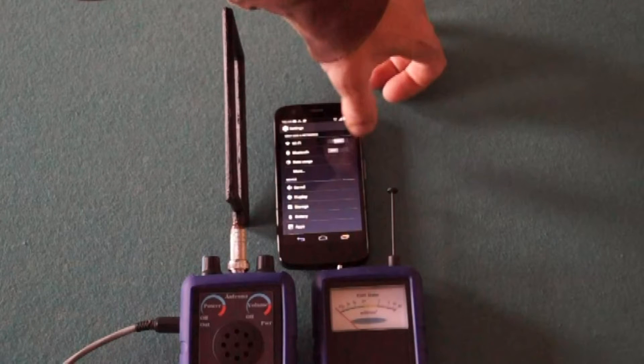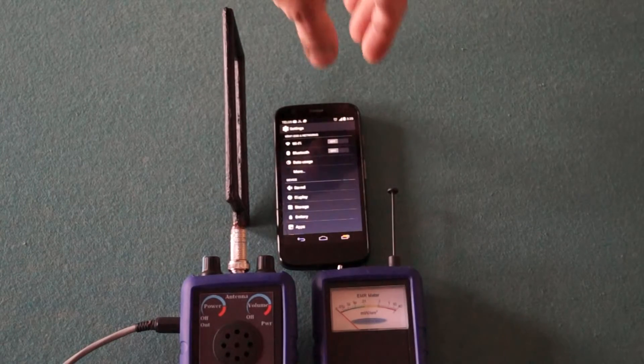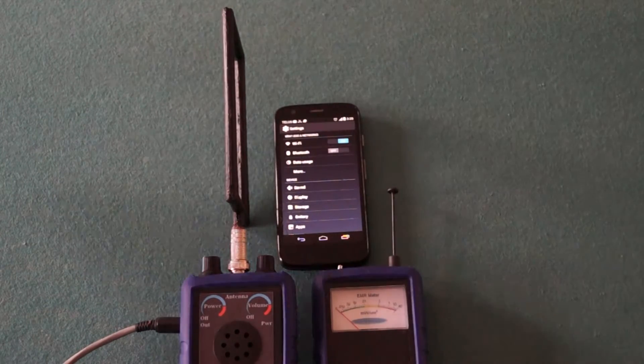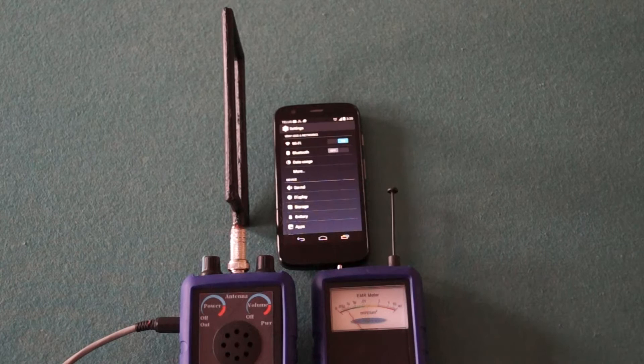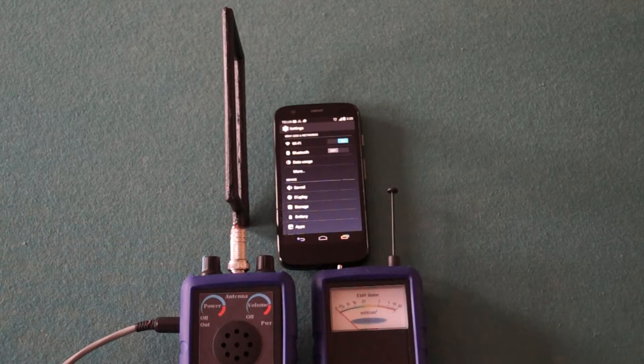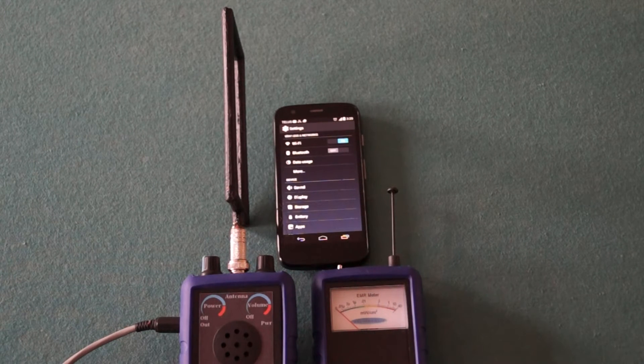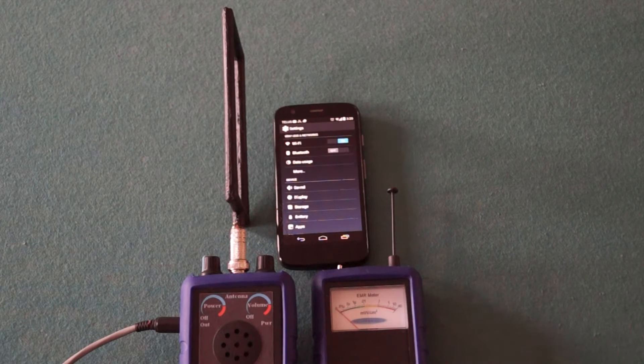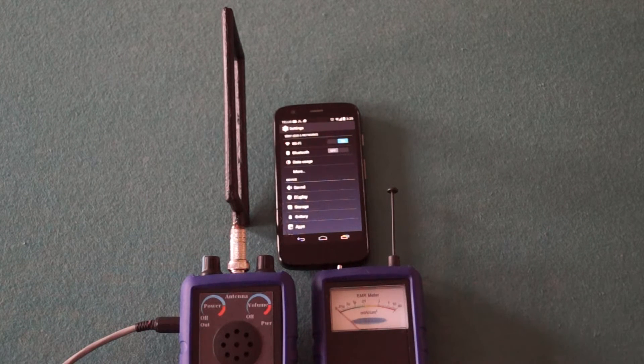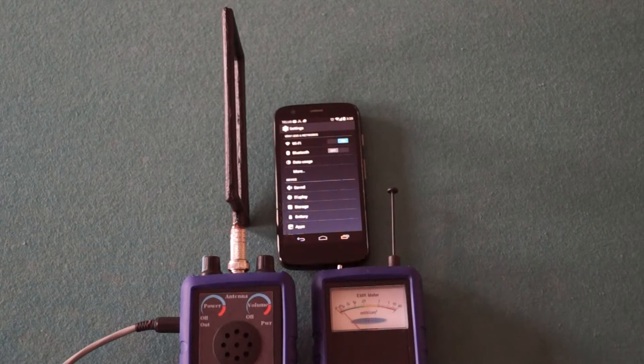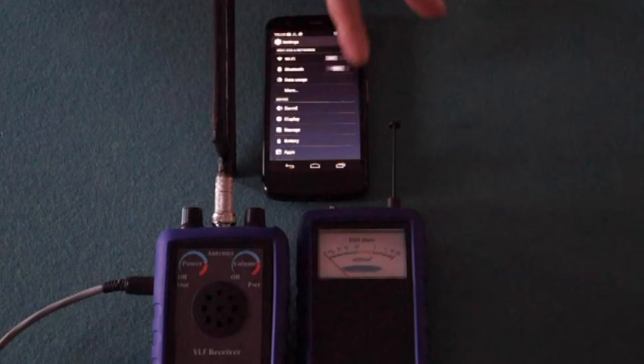We can hear Wi-Fi and compare it to the readings on the EM2 electromagnetic meter. Let's do the same for the Bluetooth.